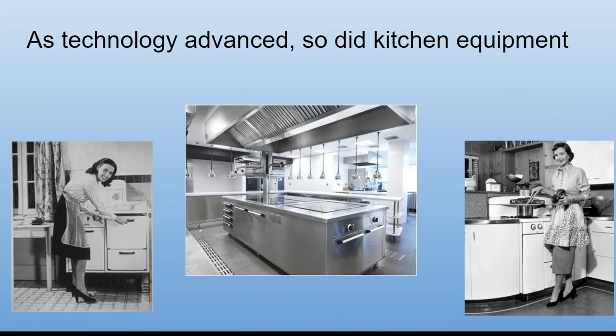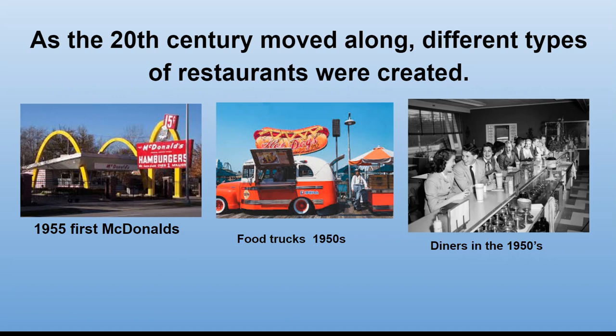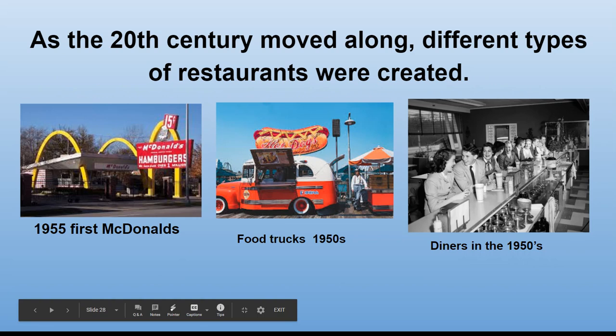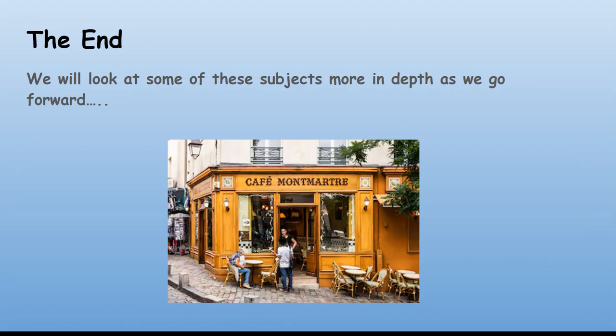As technology advanced, so did kitchen equipment. As the 20th century moved along, different types of restaurants were created — from Delmonico's all the way to McDonald's, fast food, food trucks, and different kinds of diners. That's the end of our brief history of the culinary arts. We'll be looking at some of these periods and people in upcoming lessons.